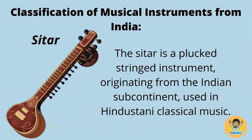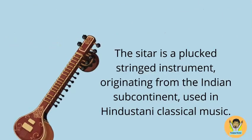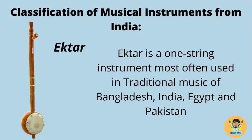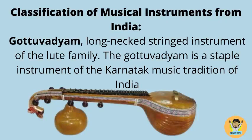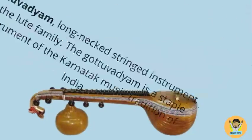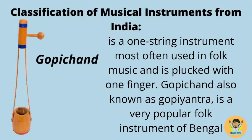The Sitar is a plucked stringed instrument originating from the Indian subcontinent, used in Hindustani classical music. The Ektar is a one-string instrument most often used in traditional music of Bangladesh, India, Egypt, and Pakistan. The Ghatavadyum is a long-necked stringed instrument of the lute family and a staple instrument of the Karnatak music tradition of India. There is also a one-string instrument used in folk music, plucked with one finger, also known as Gohpiantra — a very popular folk instrument of Bengal.